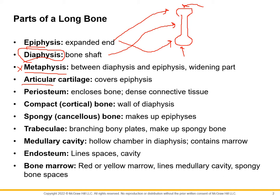The whole bone itself is going to have an outer covering called the periosteum. The periosteum surrounds all bones and it is a dense connective tissue. Each bone is going to have a combination of two types of bone — compact and spongy. I just want you to know compact and spongy; I'm not worried about the scientific names for them.